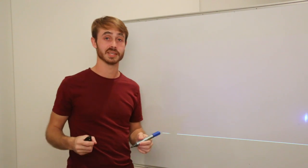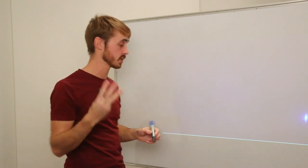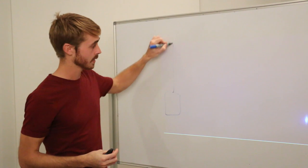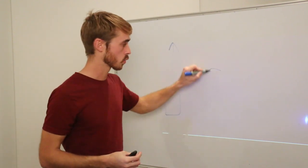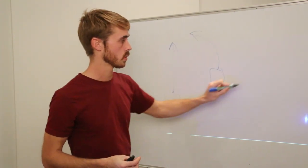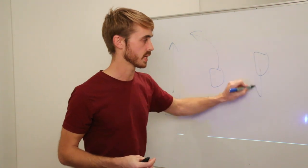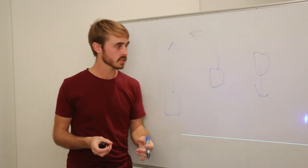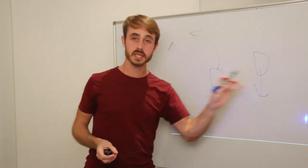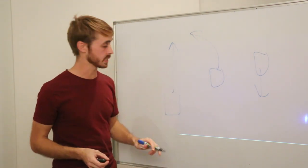If we consider a car going around a circuit, it can usually be considered in one of three conditions: either straight line acceleration, cornering, or straight line braking.